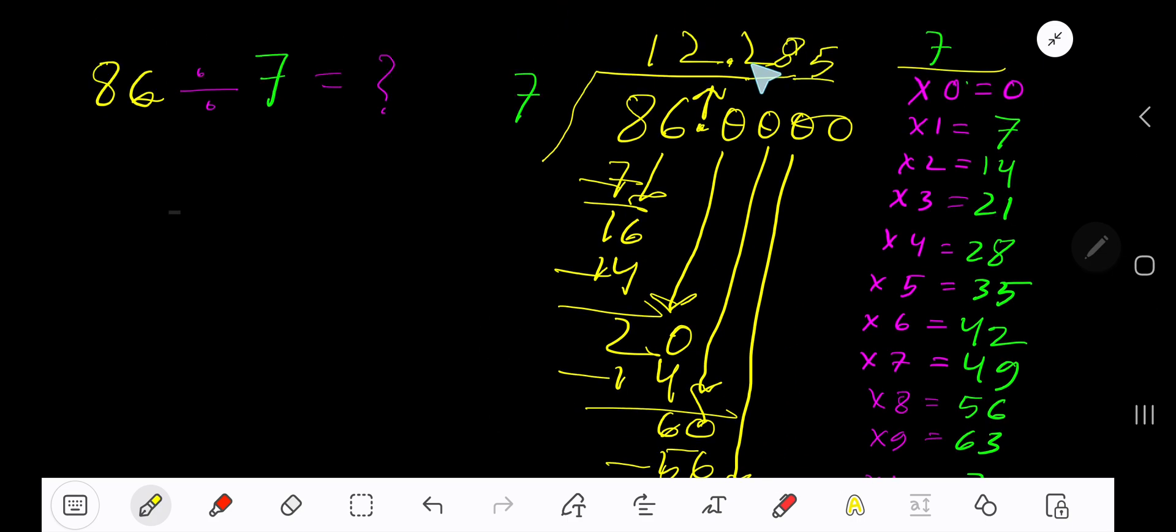You can bring down more zeros, but since we have gotten 3 places after the decimal, now place here dot dot dot. So our answer is 12.285 dot dot dot.